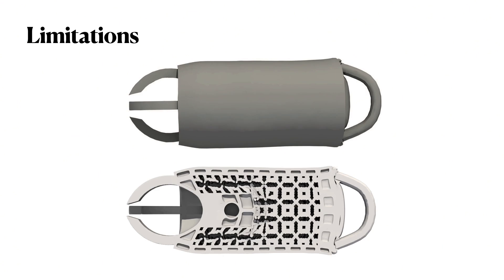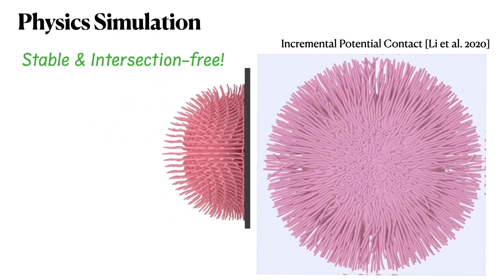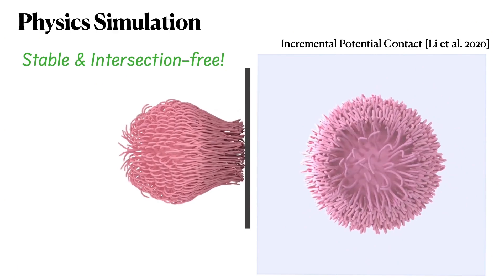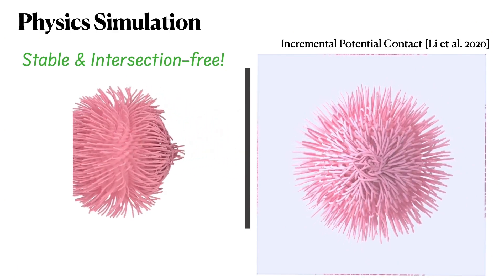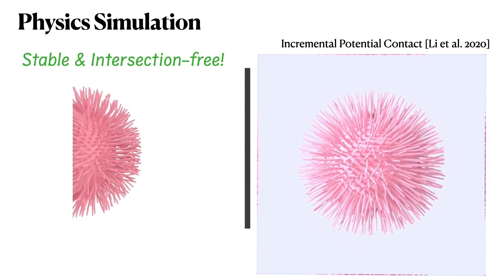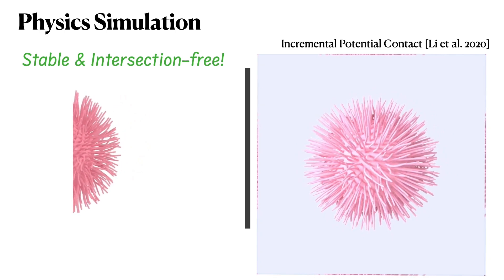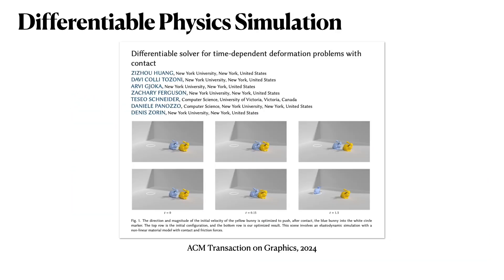However, due to the lack of collision handling, the structure intersects with itself under large deformation, which inspires us to develop a robust differentiable simulator to handle collisions. A recent work called IPC is a physics simulator that can handle collisions and guarantees stability and intersection-free results. We developed a differentiable simulator based on IPC to handle these collisions.